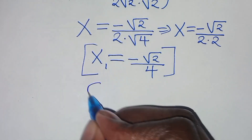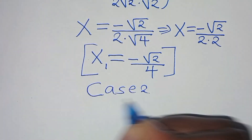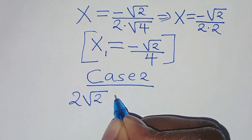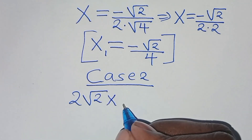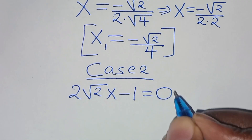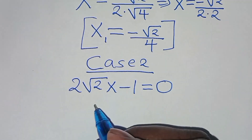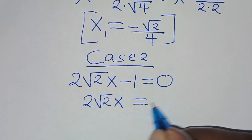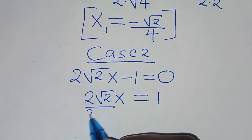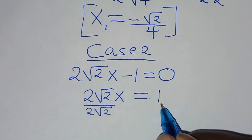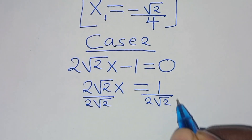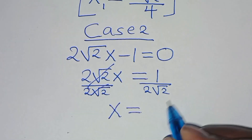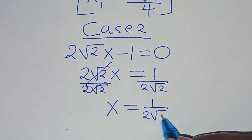Now let's solve Case 2: a minus b equals zero, that is 2√2·x minus 1 equals 0. Taking minus 1 to the right-hand side: 2√2·x equals 1. Dividing both sides by 2√2, we get x equals 1 over 2√2.